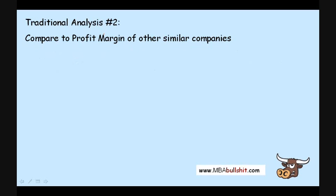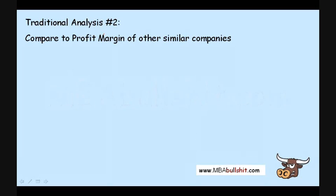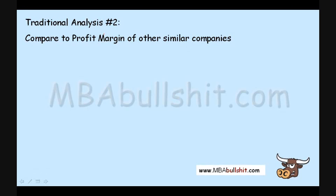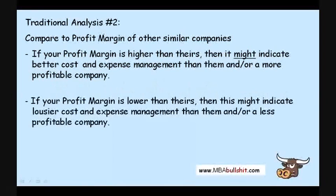The next step in traditional analysis is to compare the profit margin to other similar companies. It's important to compare similar companies — for example, it's useless to compare Walmart to a car company like Toyota. A company like Ferrari would have a very high profit margin but low volume, while Walmart has very low profit margins but high volume. If you want to analyze Walmart's profit margin, it's best to compare it to Target. If your profit margin is higher than theirs, it might indicate better cost and expense management.